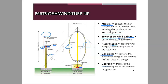The generator converts the mechanical energy of the rotating shaft to electrical energy, which can then be transferred to the utility grid. The gearbox increases the rotational speed of the shaft for the generator. There are two shafts: the low speed shaft and the high speed shaft, which will be explained in further detail.